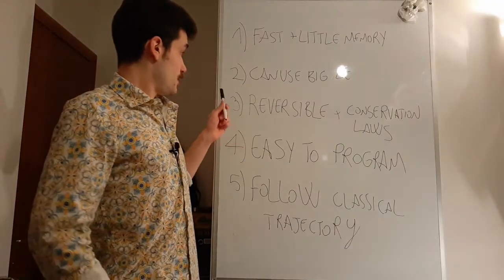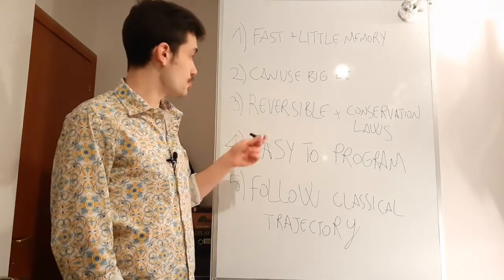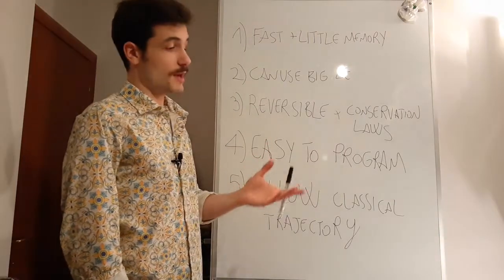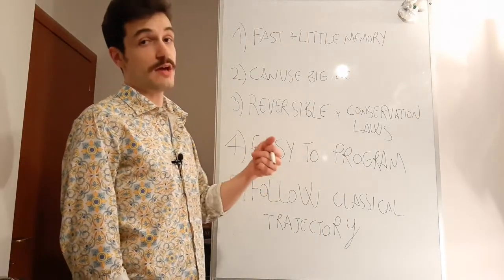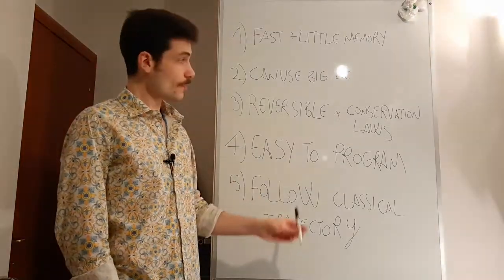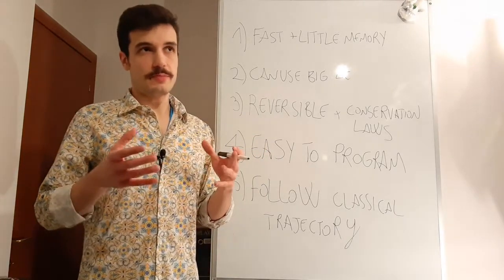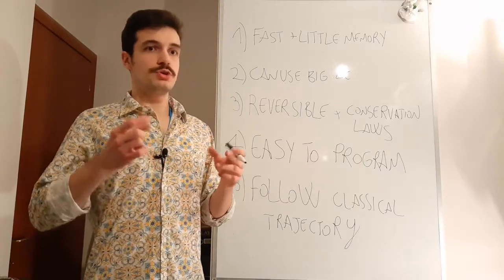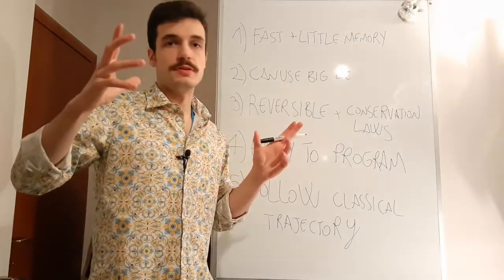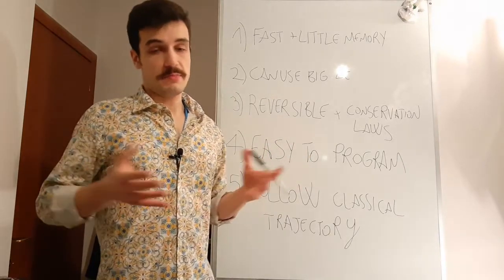We want the algorithm to be reversible, because Newton's laws are reversible, so the algorithm that has to reproduce them must be reversible. Not every algorithm is reversible, and sometimes you will prefer to use non-reversible ones because they have other kinds of perks. But usually we look for reversible ones. In a reversible algorithm, if we had no numerical error — so if we were using real numbers instead of floating point numbers — we should be able to reverse the system completely and bring it exactly back to the starting point by reversing all velocities at a certain moment.